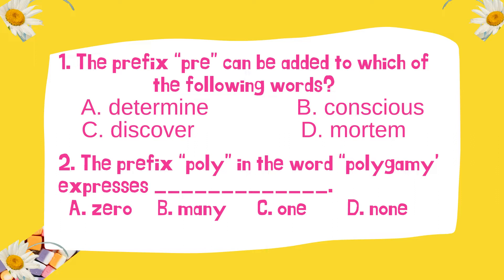Let's find out your answer. The prefix 'pre' can be added to all words given — it can be added to determine, discover, conscious, and mortem. Therefore, the answer is A, B, C, and D. Number 2: The prefix 'poly' in the word 'polygamy' expresses many.